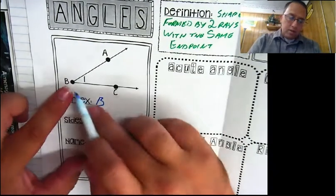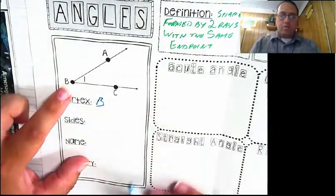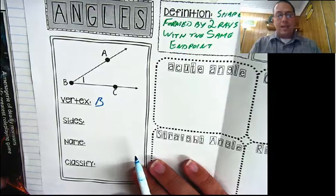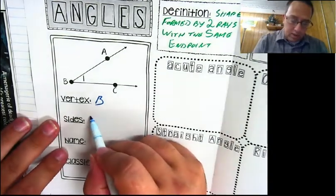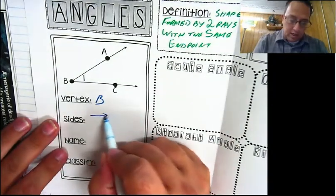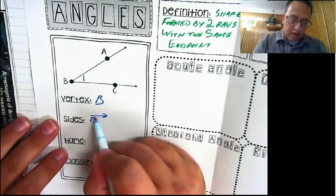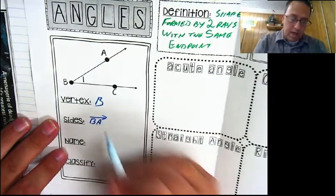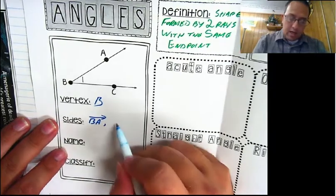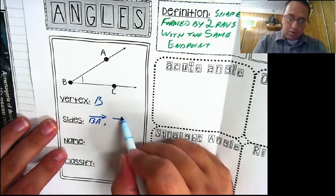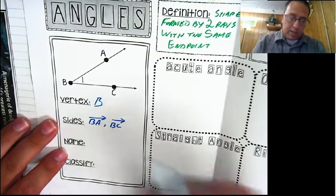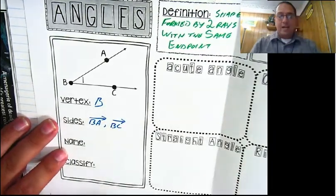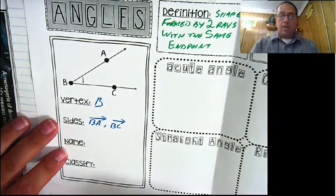And the rays themselves, those are called the sides of the angle. So my sides: I have ray BA and I have ray BC. Those are the sides of the angle.